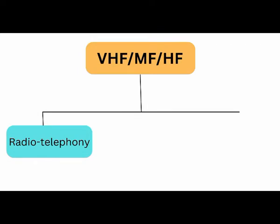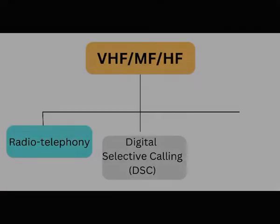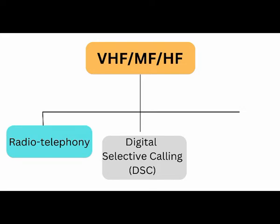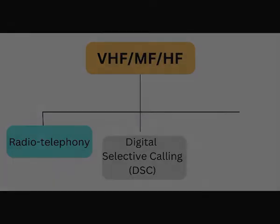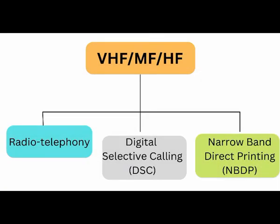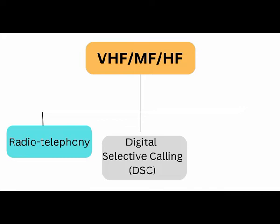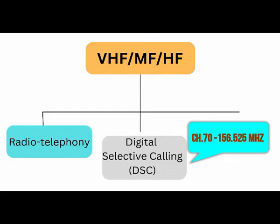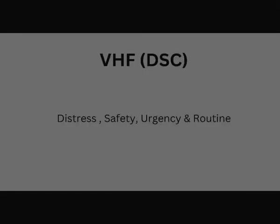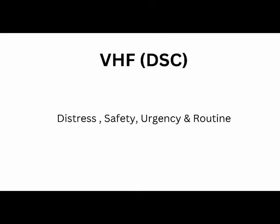You will have three different modes of usage in them: DSC (Digital Selective Calling), Radio Telephony, and NBDP (Narrow Band Direct Printing). Each mode has a particular frequency for each purpose. For Digital Selective Calling — an alerting type — in VHF we use Channel 70, which has a frequency of 156.525 MHz. This alerting can be used for distress, urgency, safety, and routine alerting purposes.